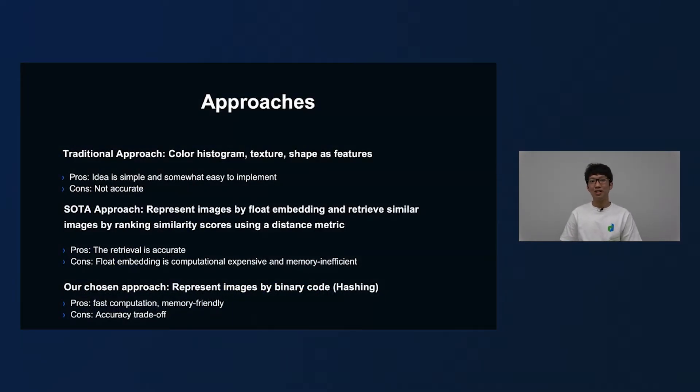So traditional approaches like use color histogram, texture, and shape as features. The good thing about this approach is the idea is somewhat easy to implement, but the con of this approach is not so accurate. Currently, the SOTA state-of-the-art approach is using deep learning. They try to represent images by float embedding and retrieve similar images by ranking similarity score using a distance metric. The pro based approach is the retrieval is accurate, but the con of this approach is float embedding is computationally expensive and memory inefficient. So when it comes to large scale, it's pretty slow. Our chosen approach is to represent images by binary codes. The good thing is binary codes is fast in computation and memory friendly, but they also come with a trade-off of accuracy.